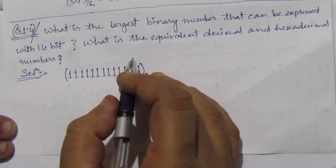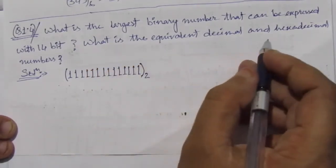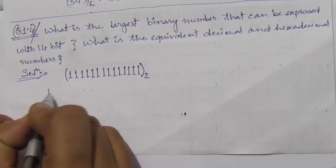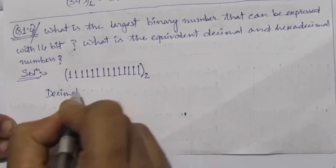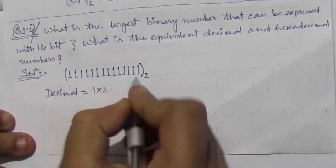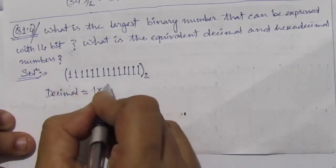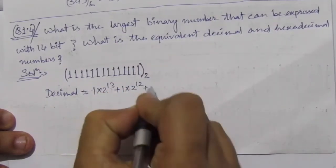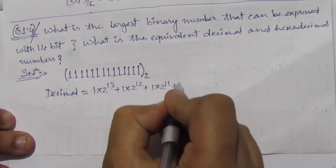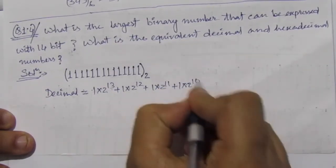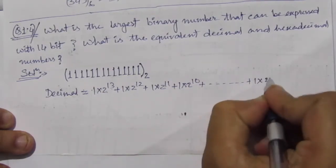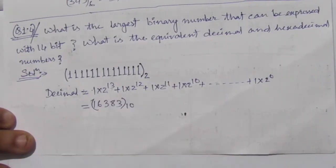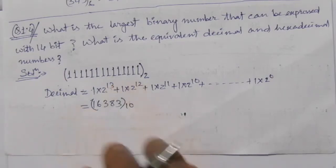The second part of the question is: what is the equivalent decimal and hexadecimal numbers? For converting this, the decimal equivalent will be 1 into 2 to the power 13, plus 1 into 2 to the power 12, plus 1 into 2 to the power 11, plus 1 into 2 to the power 10, and so on, down to 1 into 2 to the power 0. This is the decimal equivalent of this binary number.